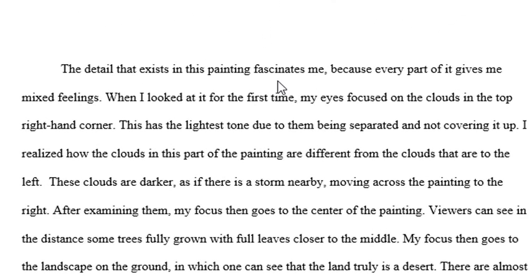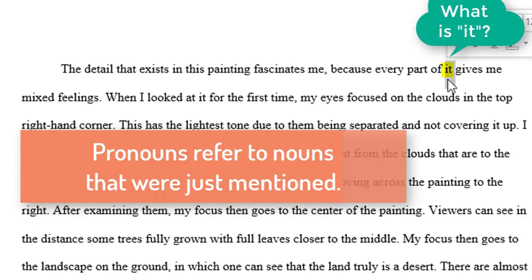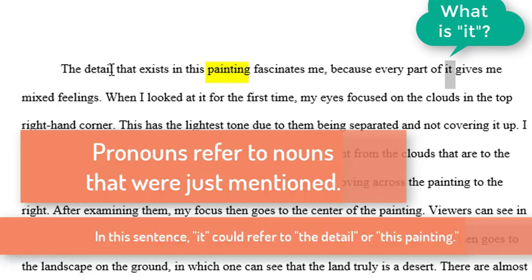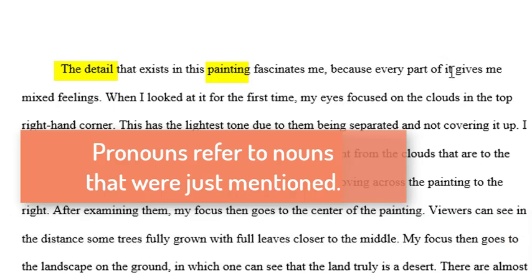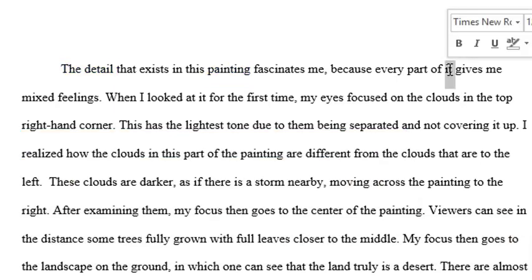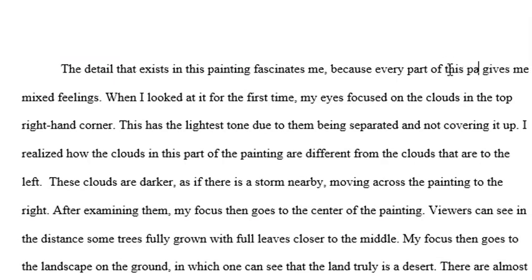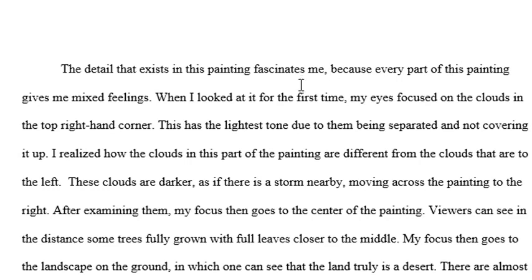So looking here, it says: 'The detail that exists in this painting fascinates me because every part of it gives me mixed feelings.' Well, we can pretty much say every part of it — that's probably the painting we're talking about. But given the issue in the previous sentence, the detail, it might be the detail. So if we're saying the painting or the detail, we need to know what we're talking about. So we'll say 'every part of this painting' — that's a way of fixing that very quickly, makes it clear. The sentence now reads: 'The detail that exists in this painting fascinates me because every part of this painting gives me mixed feelings.'